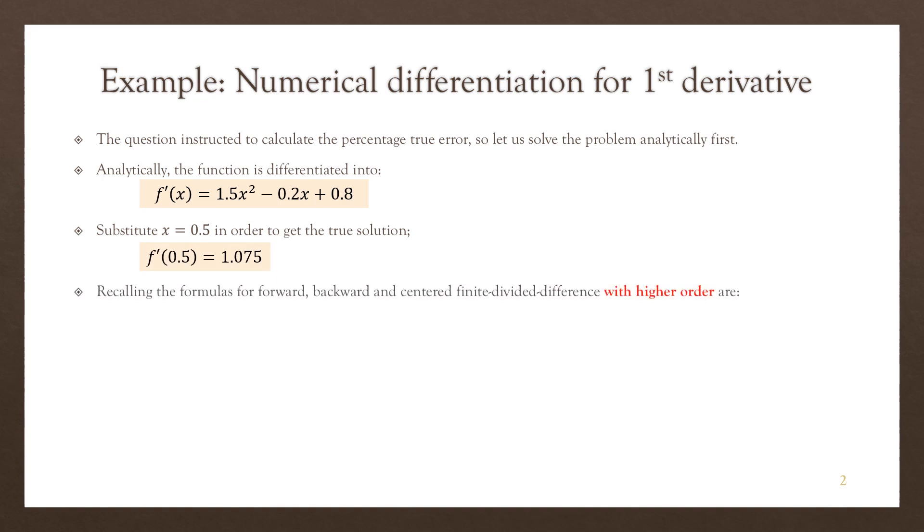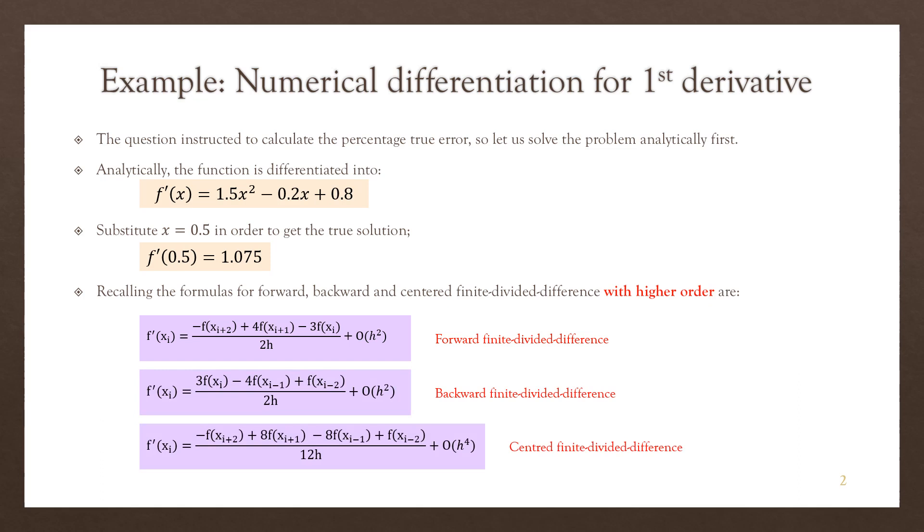Now we recall the formulas of the FDD, BDD, and CDD with high order. This is for FDD forward finite divided difference. This is for the backward method, and this is for the centered finite divided method. We can see that we need more terms, additional information, compared to the lower order method. We need to have the value of the function at x_i plus 2. We also need another value of function at x_i minus 2.